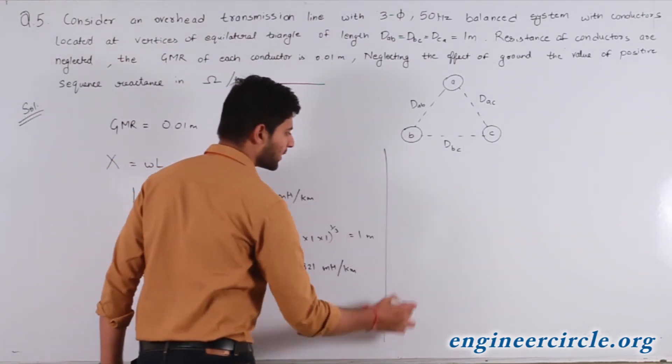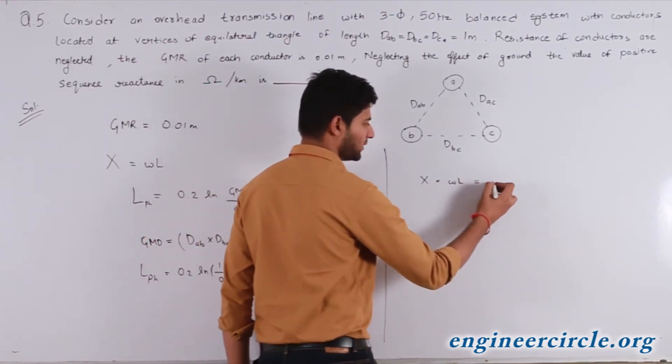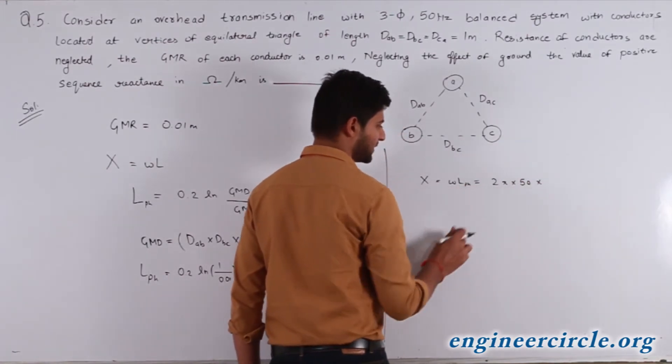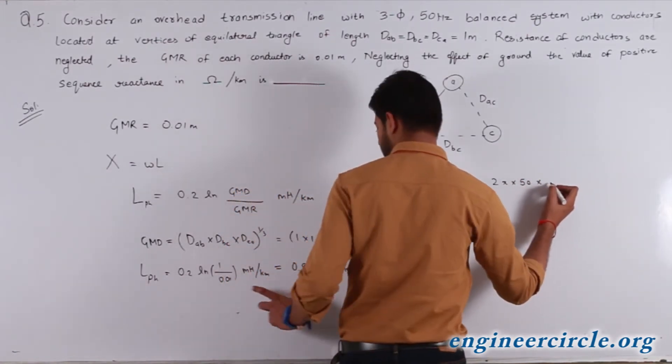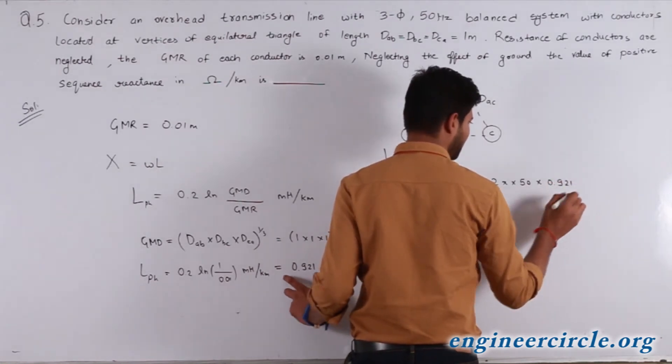This will be equal to x = ωL, that is 2π × 50, that is the frequency, multiplied by the L per phase inductance whose value comes out to be 0.921 in millihenry per kilometer.